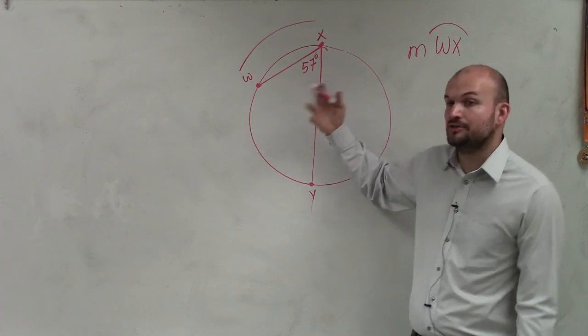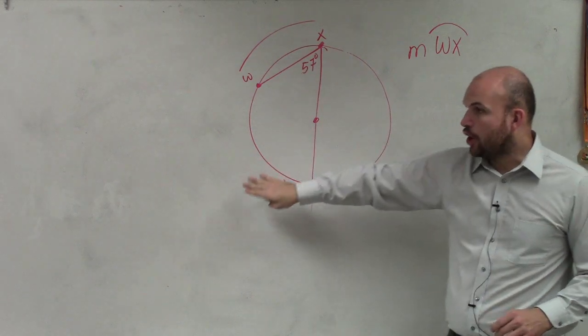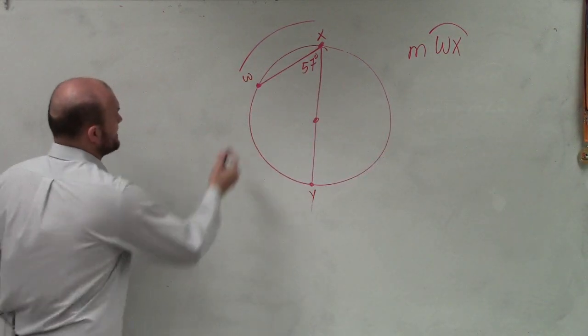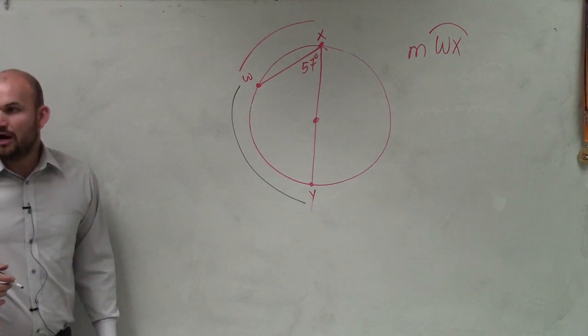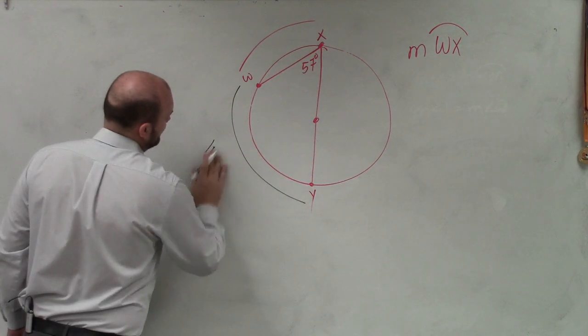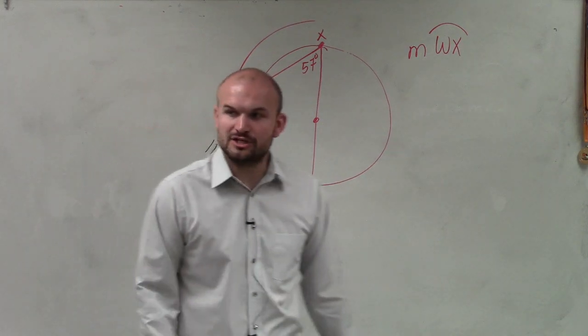The only thing we have learned about 57 is, if I project that over, I can now say that based on what I learned about inscribed angles, that from here to here is now going to be 114 degrees.